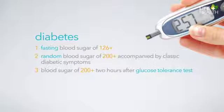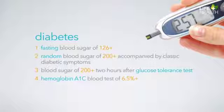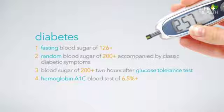And finally, a hemoglobin A1C blood test of 6.5% or higher. We'll learn more about these tests in an upcoming session.